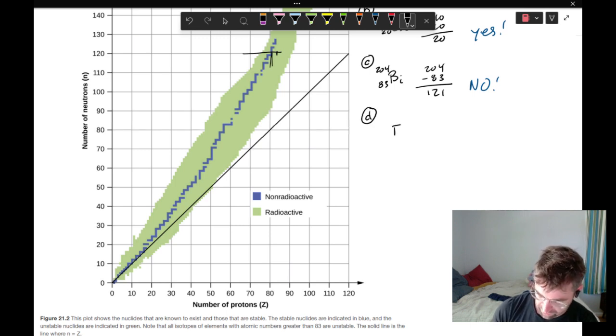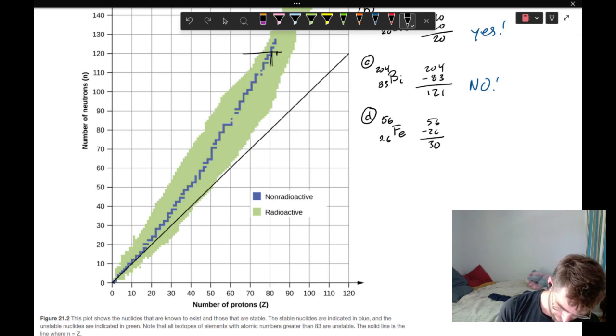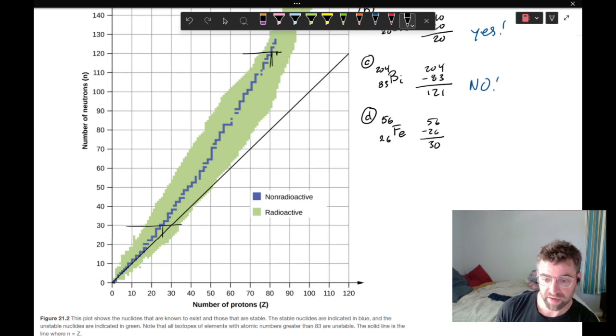For D, it was iron-56. Iron is the 26th element on the periodic table. 56 minus 26 is 30. And we have 30 neutrons. We have 26 protons. This one is stable.